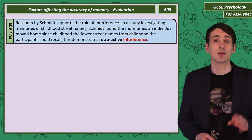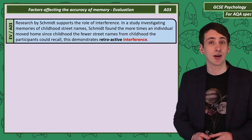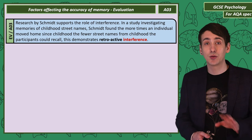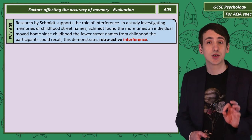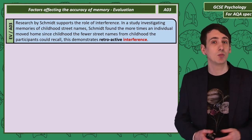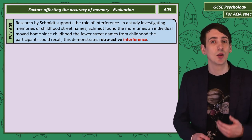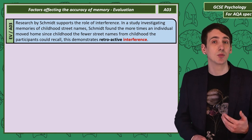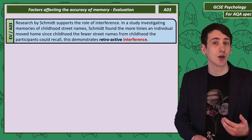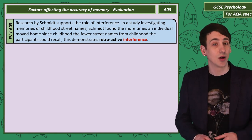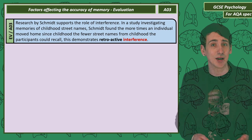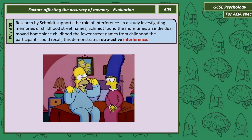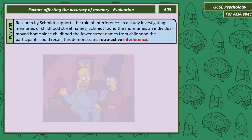Let's consider an evaluation for each of these factors affecting the accuracy of memory. There's research evidence by Schmidt showing that the more times someone moved house, the more difficult it was to remember the street names around their childhood home. As Homer Simpson said, 'Every time I learn something new, it pushes some old stuff out of my brain.'